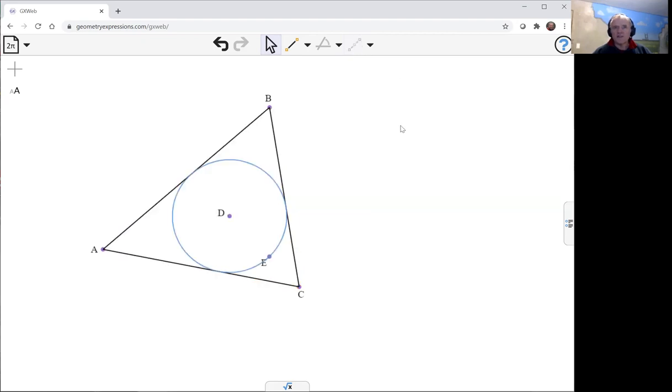I want to create the points of contact, so in the case of E, I'm going to use the incidence constraint to make sure it lies on that line. The other two points of contact I can just draw them, and I'm going to be drawing the triangle, so I can just draw them at the same time as I draw the triangle segments.